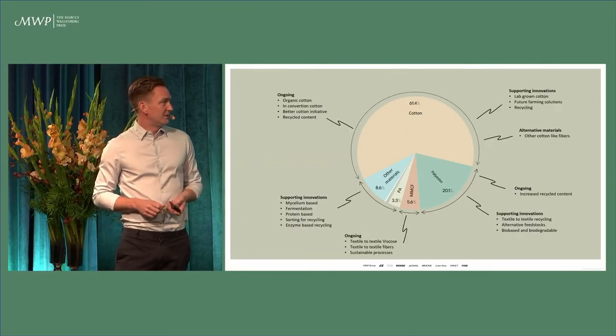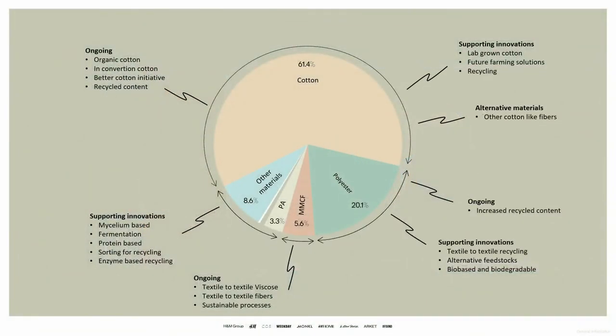So what are we doing in these different areas? For cotton, which is the most important material for us, we're working quite a lot with organic cotton. We're also supporting conversion cotton, which means farmers who want to remake their production from conventional cotton into organic cotton. It takes about four years. During that time, we support them by buying from those farms to enable that transition, because they will lose money and yield in their production. We also have Better Cotton Initiative, an organization monitoring and helping farmers to grow cotton in a more responsible way. We also try to use more recycled content in cotton.